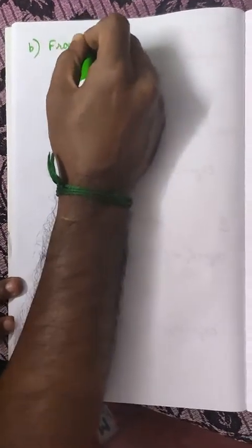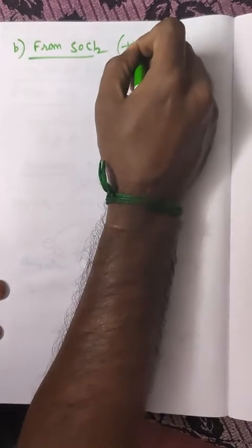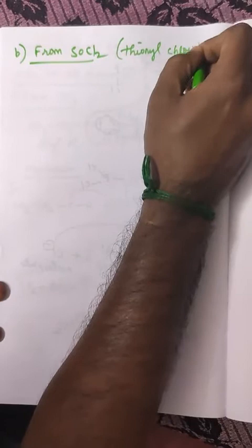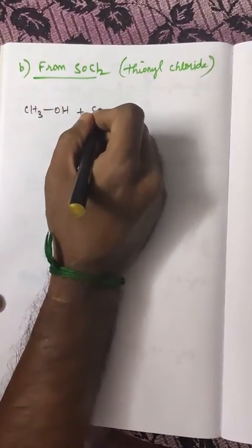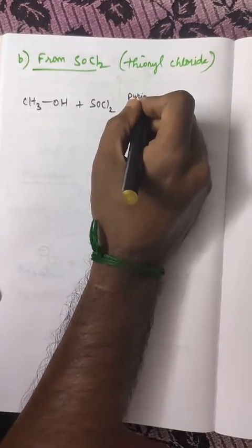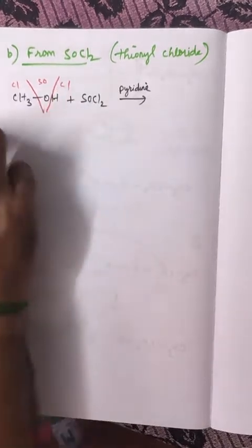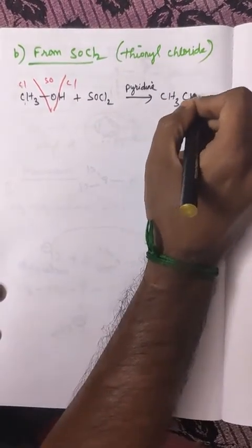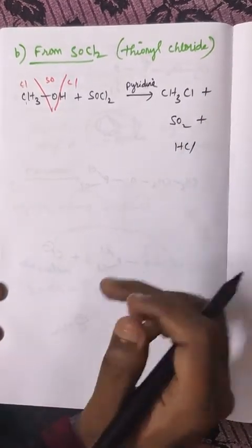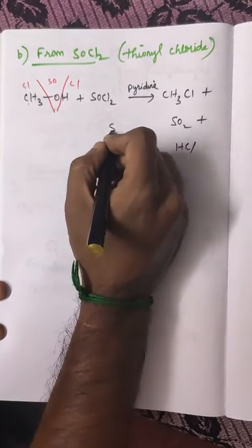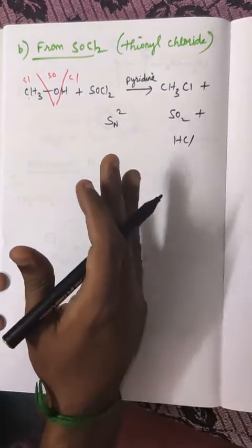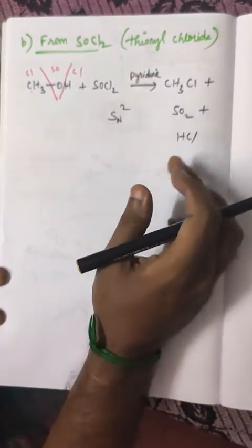The next one is preparation of alkyl halide from SOCl2. SOCl2 is otherwise called thionyl chloride. Here we are going to see how alkyl halides are formed from alcohol using thionyl chloride. I am taking methyl alcohol treated with SOCl2. Here also pyridine acts as an important reagent. As a result, CH3Cl methyl chloride plus SO2 plus HCl are produced as products. This reaction also follows SN2 mechanism. These are the two different methods from which alkyl halides are prepared from PCL3 and SOCl2. Thank you.